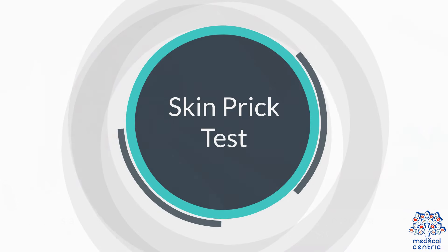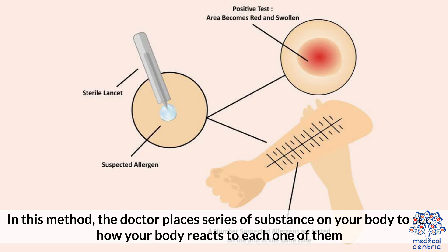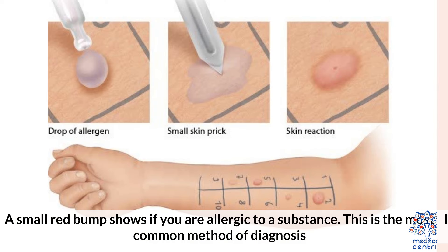Skin prick test: In this method, the doctor places a series of substances on your body to see how your body reacts to each one of them. A small red bump shows if you are allergic to the substance. This is the most common method of diagnosis.